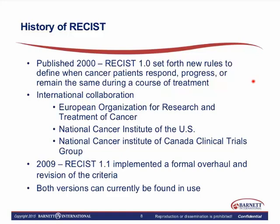In 2009, the first revision was published, called version 1.1. Both versions are currently in use, and that depends upon the preferences of sponsors, regulatory authorities, NCI collaborative groups, or sometimes the actual solid tumor types being evaluated. There's no criteria built within the versions themselves that would designate which one to use. In my experience working on industry sponsor trials, if they started with version 1 in their phase 1 trials, they'll continue using version 1 through the full development of the product for consistency.